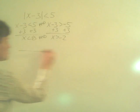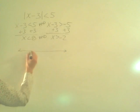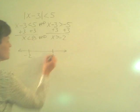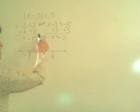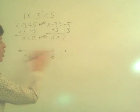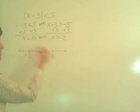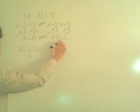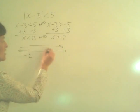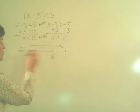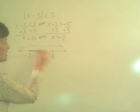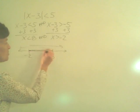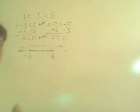Let's look at the graph for that. Here's negative 2, and here's 8. Because it's an 'and', I want to shade all the numbers that are less than 8 and all the numbers that are greater than negative 2. The numbers that work for both are right here in the middle. So my graph would be shaded in between negative 2 and 8.